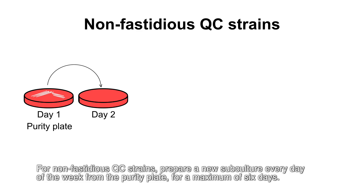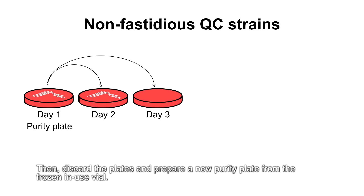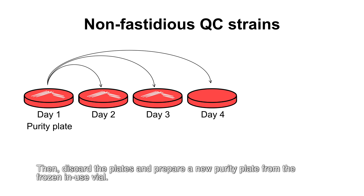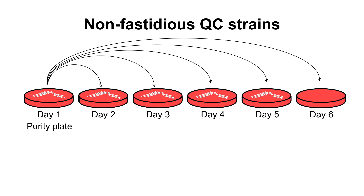For non-fastidious QC strains, prepare a new subculture every day of the week from the purity plate for a maximum of six days. Then discard the plates and prepare a new purity plate from the frozen in-use vial.